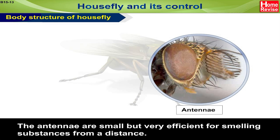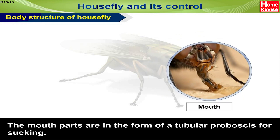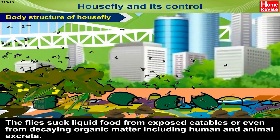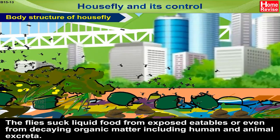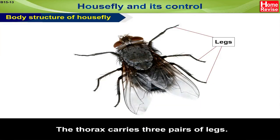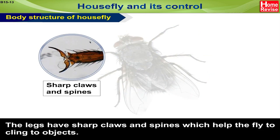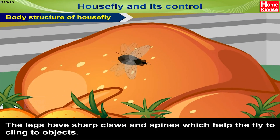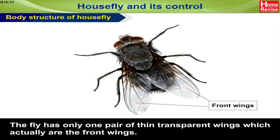The antennae are small but very efficient for smelling substances from a distance. The mouth parts are in the form of a tubular proboscis for sucking. The flies suck liquid food from exposed eatables or even from decaying organic matter, including human and animal excreta. The thorax carries three pairs of legs. The legs have sharp claws and spines which help the fly to cling to objects. The fly has only one pair of thin transparent wings, which are actually the front wings.